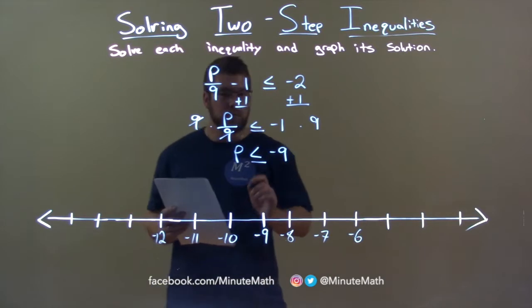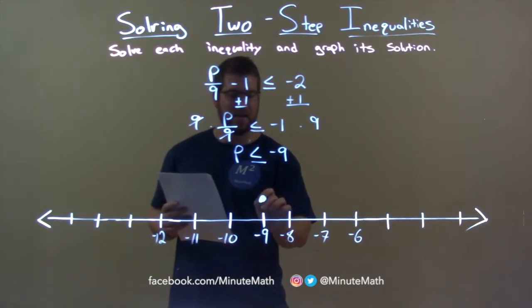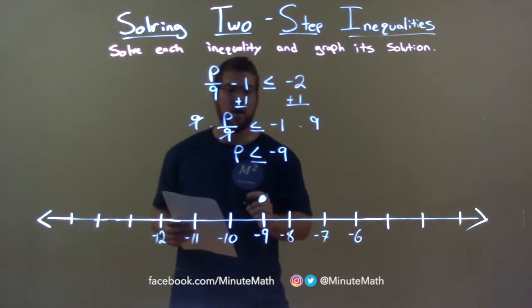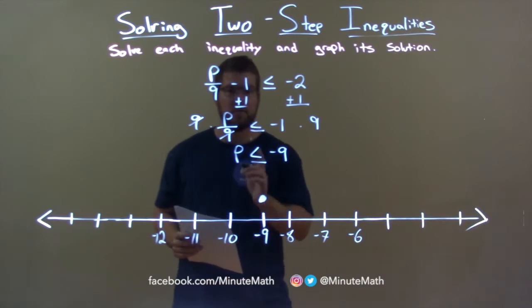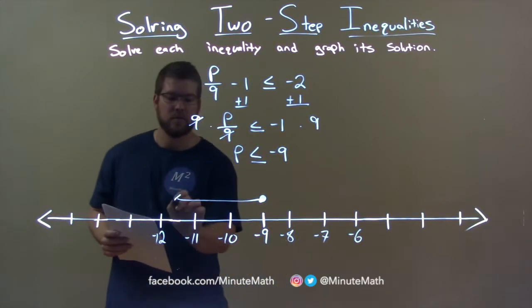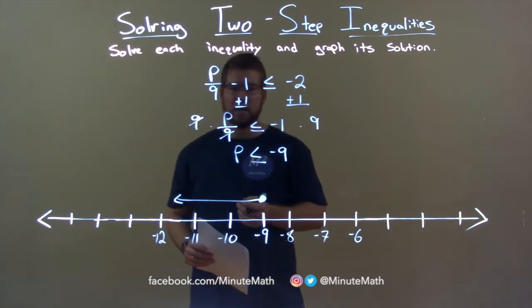We have a closed circle at negative 9 because P can equal negative 9, right? It tells us there. But P is also less than negative 9, so the arrow goes to the left. And there we have it. The graph matches our final answer. P is less than or equal to negative 9.